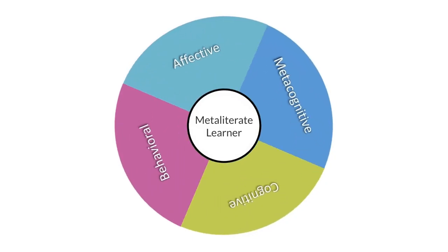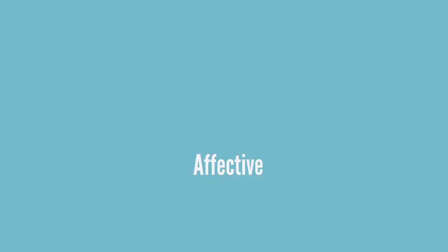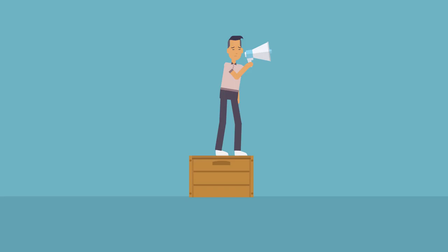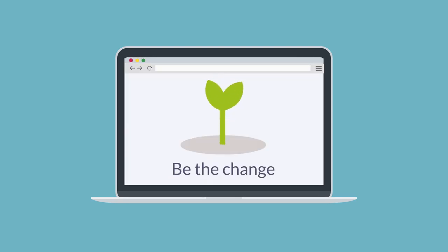The affective domain describes the emotions and attitudes that individuals possess. From a metaliterate perspective, learning is impacted by affective considerations such as how you feel about an issue or by an attitude you may have about a specific topic or concern. Your emotions and attitudes may interact with the other domains, and an emotional response may motivate you to ask questions and to learn more about a particular concern or issue.